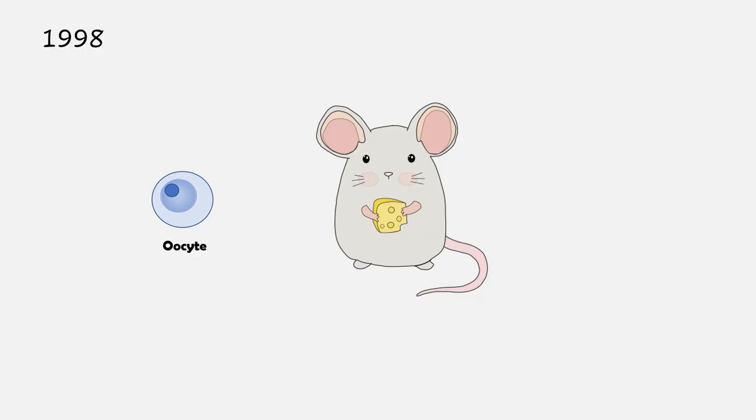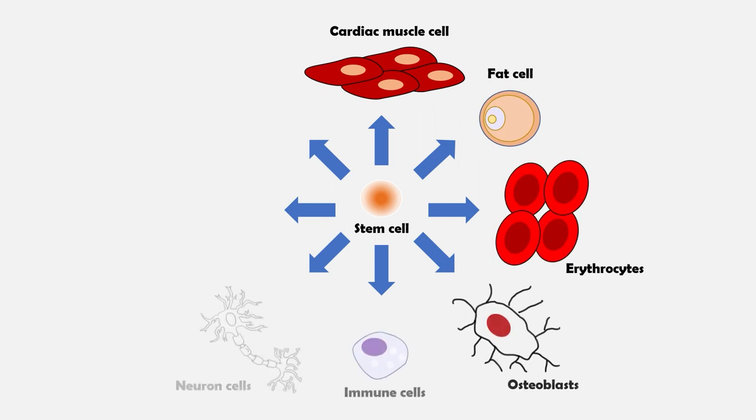In 1998, it was found that during this process, the oocyte could reprogram a terminally differentiated cell back into an embryonic stem cell. These stem cells were pluripotent, being able to differentiate and develop into any somatic cell type in the body.